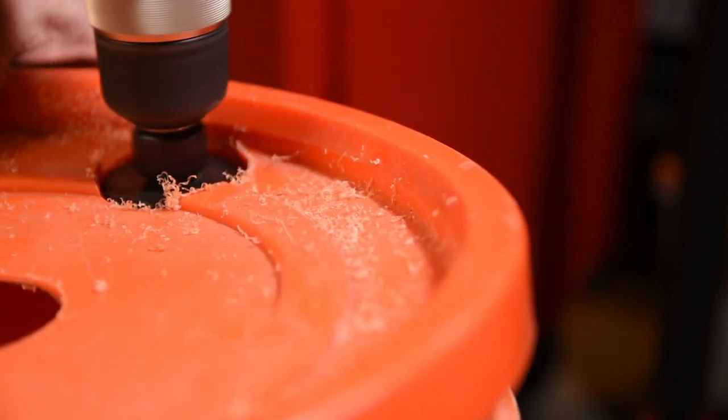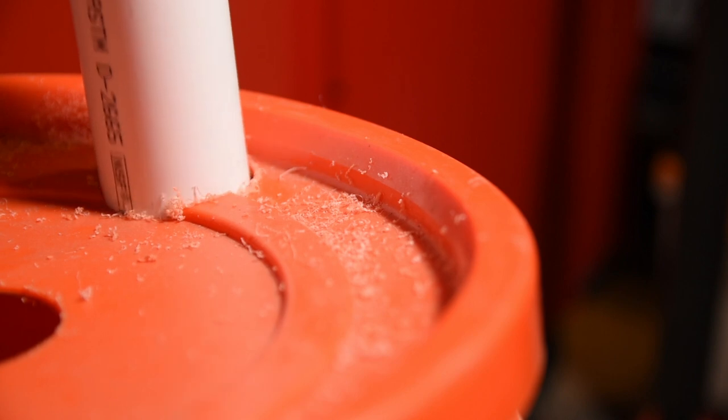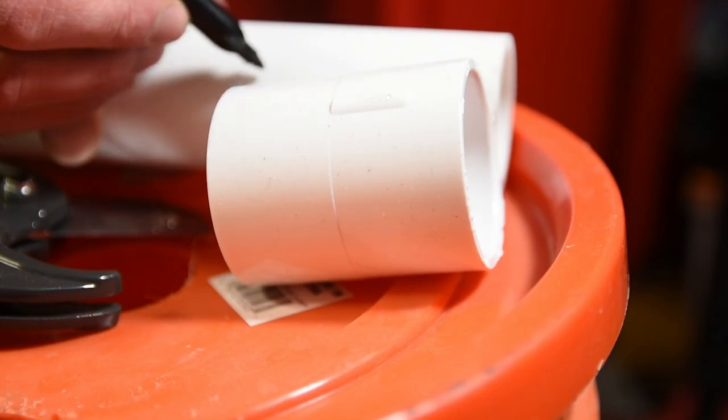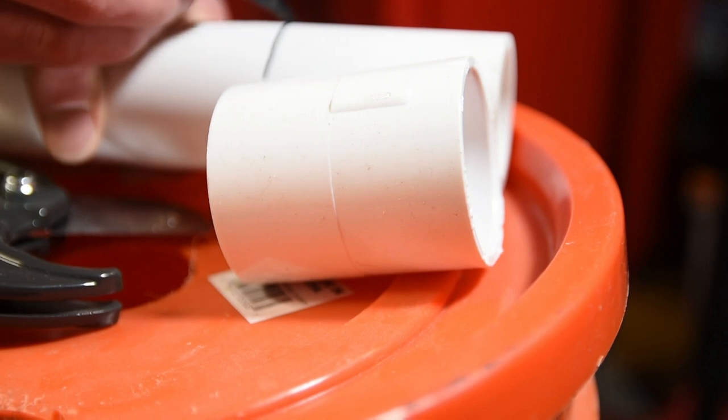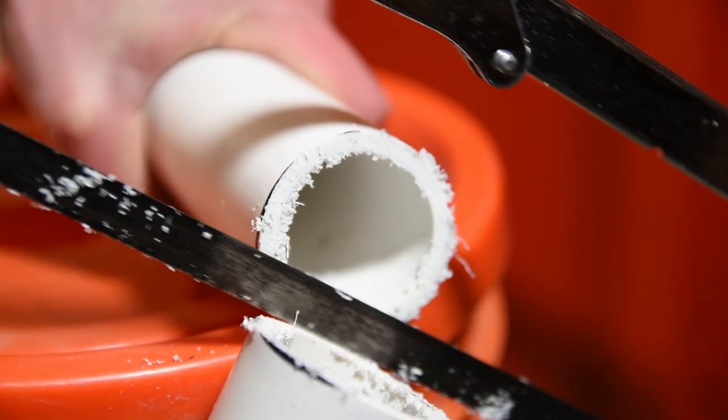Then check your hole size with the PVC pipe, and there should be a little bit of wiggle room as you put it in. Cut two sections of PVC pipe that are about as long as the coupler. And hopefully your hacksaw is a little bit sharper than mine.